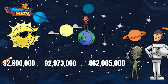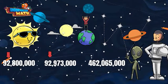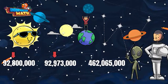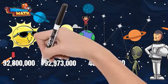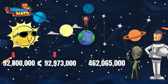Let's look at the next place value: millions. Both numbers also have a 2 in this place value, so far they are the same. The next place value is the 100,000's. Earth has a 9 in this place value, but the moon has an 8. This means Earth's distance from the Sun is greater than the moon's distance.